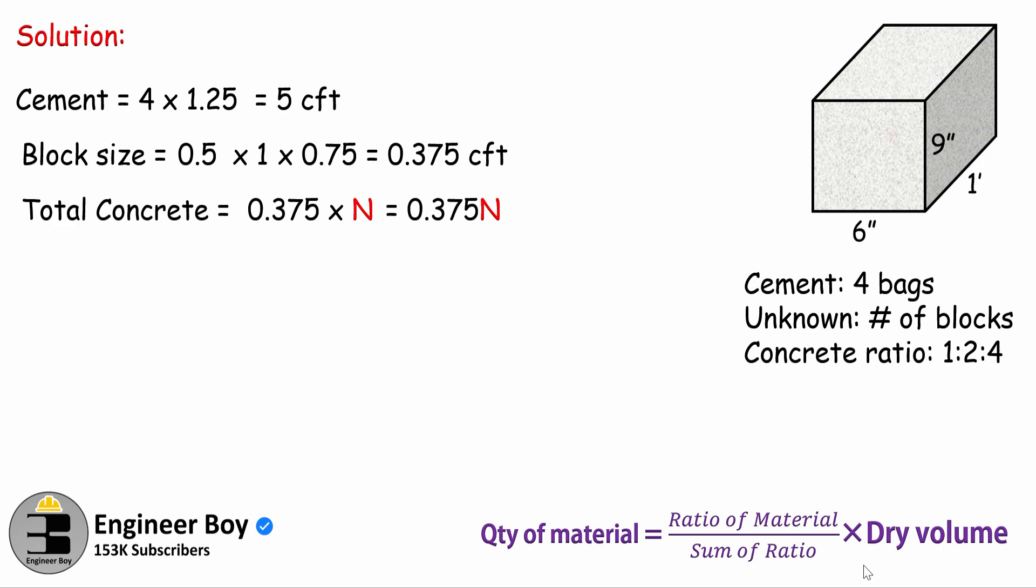Now the only quantity that is known is the cement. So let's just determine the cement's quantity. Cement, of course, is known. The ratio of material is actually one. The ratio for concrete that is known is 1:2:4, where 1 means the ratio of cement, 2 means the ratio of fine aggregate, 4 means coarse aggregate.